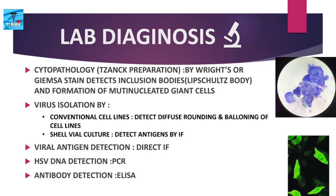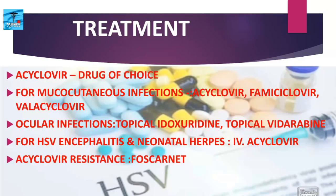Virus isolation can be done using conventional cell lines, which detect diffuse rounding and ballooning of cell lines. In shell vial culture, antigens can be detected by immunofluorescence. Viral antigen detection can be done by direct immunofluorescence. HSV DNA detection is done by PCR. Antibody detection can be done by ELISA. An indirect immunofluorescence assay for HSV1 or HSV2 antibody detection is shown in the figure.